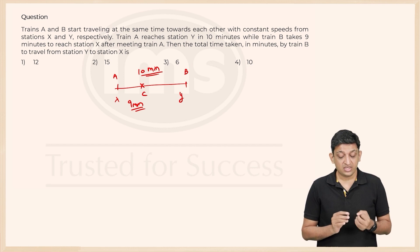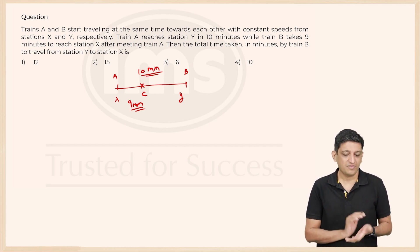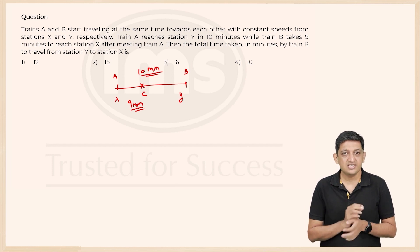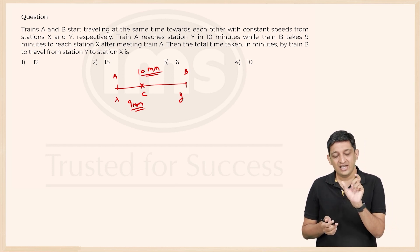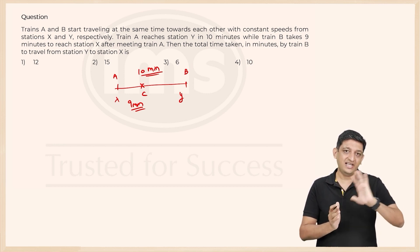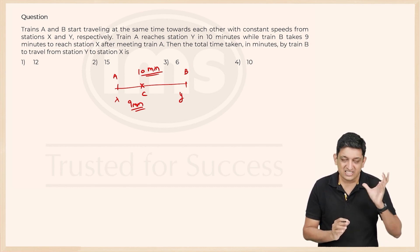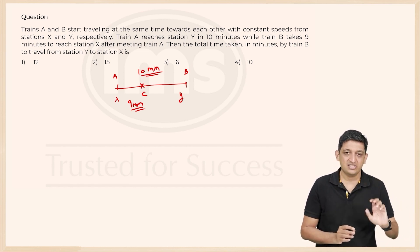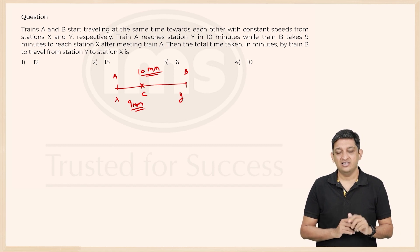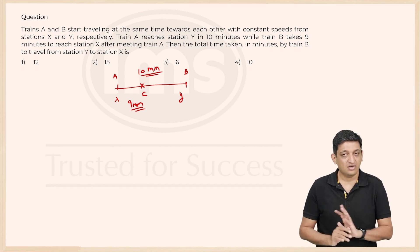Now we have to figure out the total time taken in minutes by train B to travel from station Y to station X. There are multiple ways of solving this. One way is using the concept of when two trains cross each other, you can say square root of something upon something has to be the ratio of the two speeds. We can also use a basic way to figure it out as well.